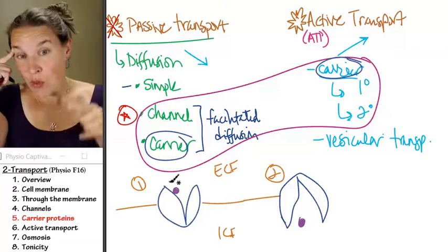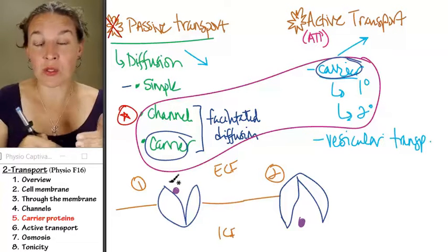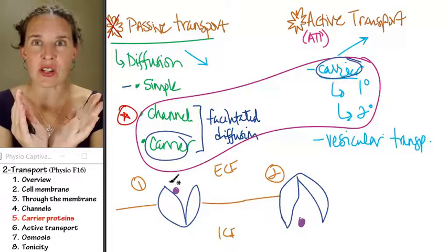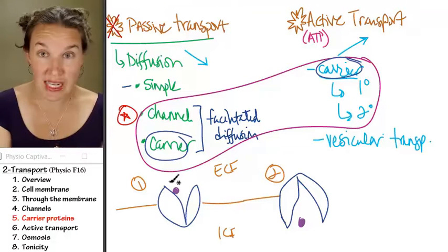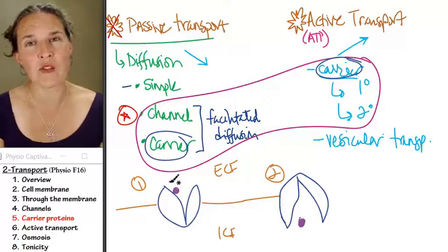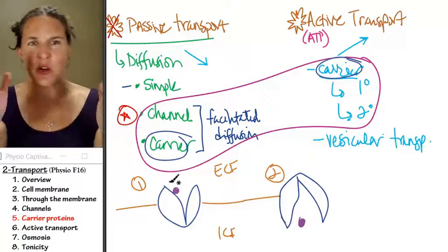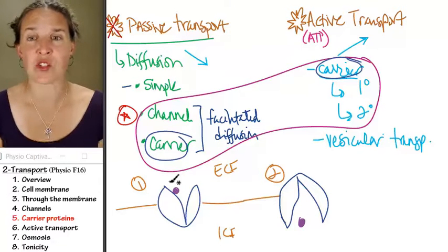Now, if you know that these carriers can enable facilitated diffusion or active transport, what is the difference? Like, how are you going to know if this is facilitated diffusion or active transport?